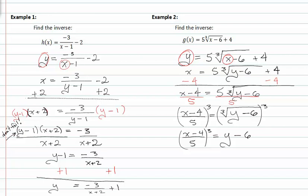Now, if I add six to both sides, that will give me x minus four over five raised to the third power plus six is equal to y.